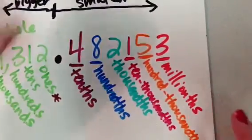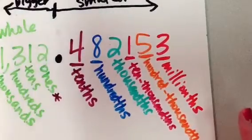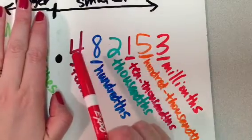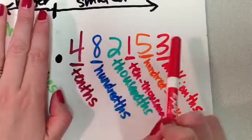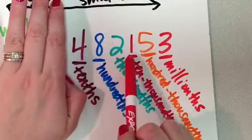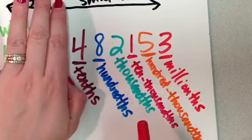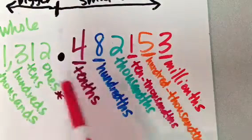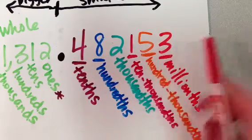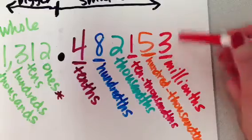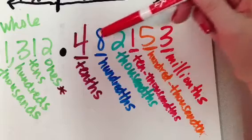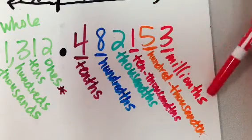So, if I was only looking at this portion right here, how would I say that number? I'm going to say it just like it was in whole numbers. So if it was a whole number, it would be 482,153. That's how I say it. It's going to be 482,153, and then I tack on whatever place this guy, my last number is in, I tack on his decimal word. So, 482,153 millionths.